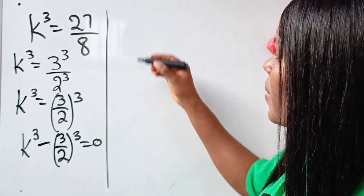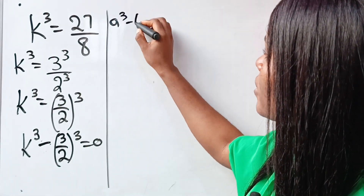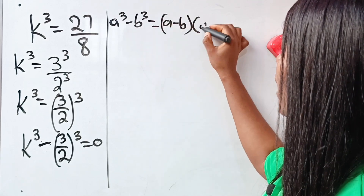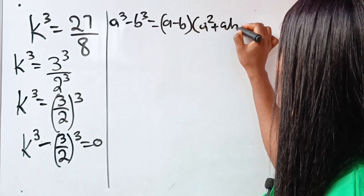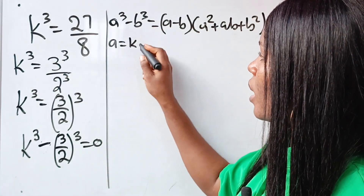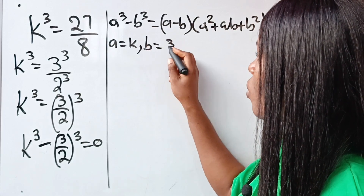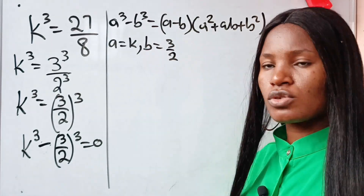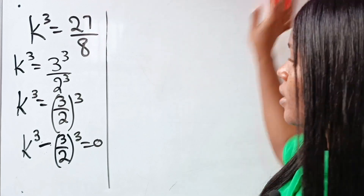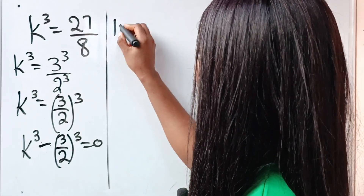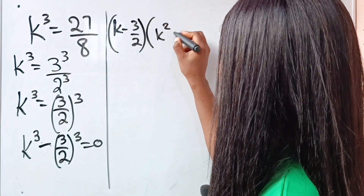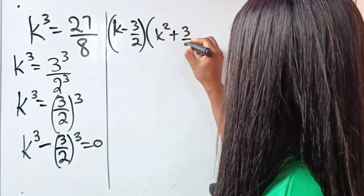Remember that when you have a to the power of 3 minus b to the power of 3, it equals a minus b multiplied by a squared plus ab plus b squared. Now in our case, our a is equal to k, while our b is equal to 3 over 2. So we are going to write this as k minus 3 over 2, multiplied by k squared plus k times 3 over 2, plus 3 over 2 squared.